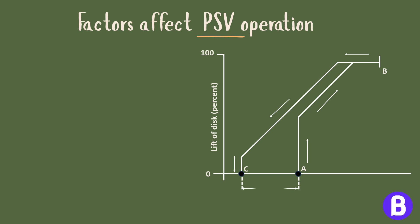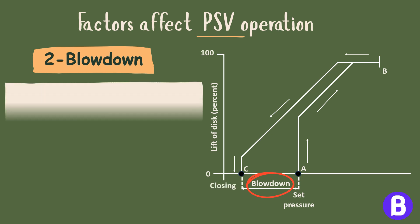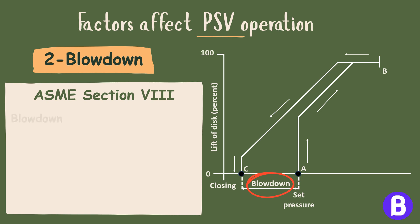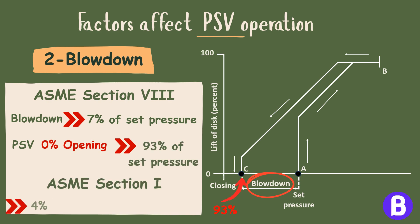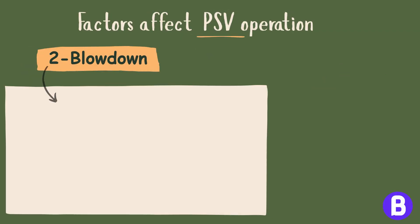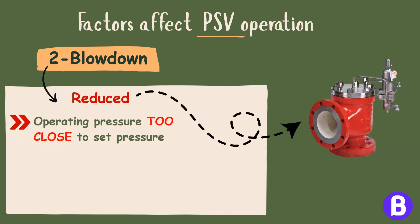Factor 2: Blowdown. Blowdown is the difference between the set pressure at which the pressure safety valve starts to open and the pressure at which the valve reseats. ASME Section 8 considers blowdown to be 7% of set pressure — in other words, the PSV totally closes at 93% of set pressure — while ASME Section 1 considers 4%, meaning the valve closes at 96% of set pressure. Blowdown should be reduced for a pilot-operated valve, as it operates at a pressure too close to set pressure, so it is considered to be 3% to avoid interference with operating pressure.